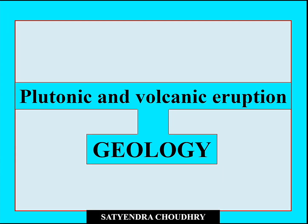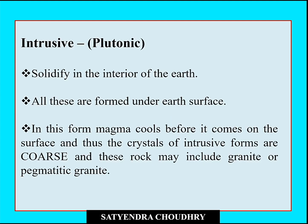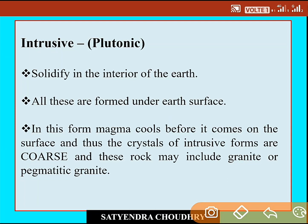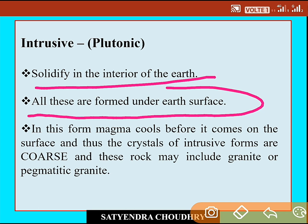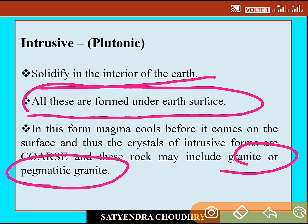Here we will differentiate two terms: plutonic and volcanic eruption. In plutonic eruptions, molten material is solidified in the interior of the earth — all these forms are made under the earth's surface. Magma cools before it comes to the earth's surface, so the crystals of plutonic forms are coarse. These rocks may include granites and pegmatitic granite.